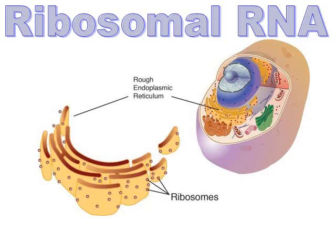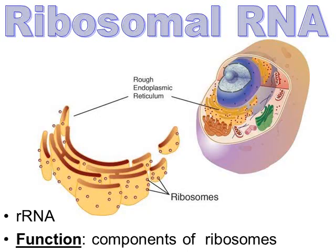Another type of RNA is rRNA — ribosomal RNA. Ribosomes are the most numerous organelle within the cell, and they are actually made from large, complex strips of rRNA. That's why it's called ribosomal RNA — it's what ribosomes are made from. Today we'll learn transcription, and in a couple of days we'll learn translation. While we'll focus on messenger RNA and tRNA, rRNA is worth mentioning because ribosomes play a big role in these processes as well.